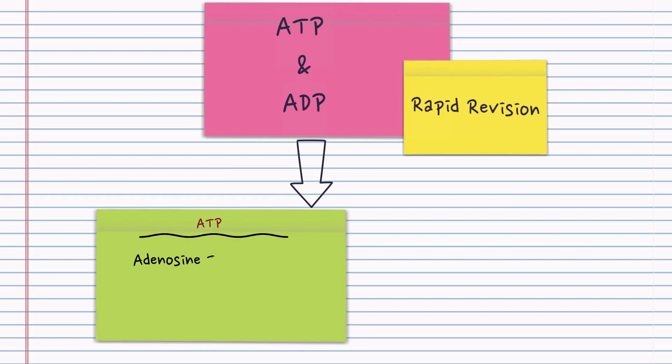So ATP, its full name is adenosine triphosphate. So that would be one of the first things you write down, its full name, adenosine triphosphate. And it's a nucleotide.